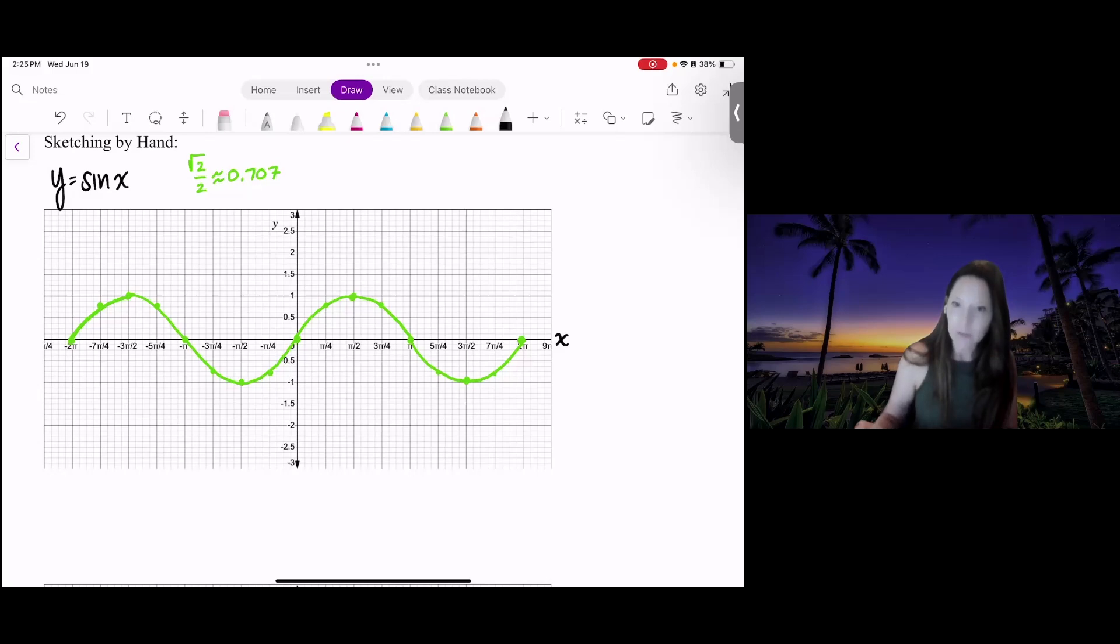An odd function means that when you plug in a negative x into the function, you get out the negative function, specifically f of negative x equals negative f of x. Whenever you're substituting in a negative x, you'll get out the negative y value.